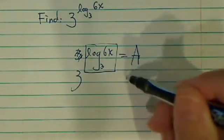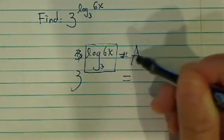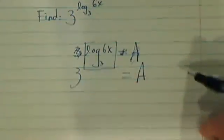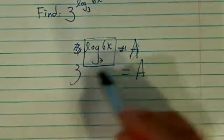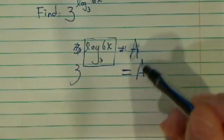Once you put this whole thing equal to a, let's write it better. So it's 3 to this whole thing is equal to a.